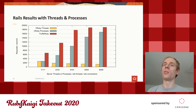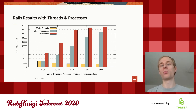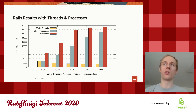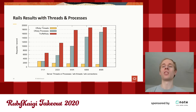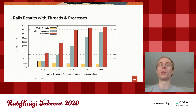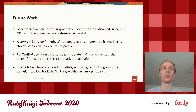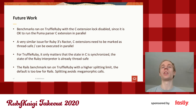Now let's look at Rails. We have CRuby with threads, CRuby with processes, and TruffleRuby. CRuby with threads again becomes slower as threads increase. As the baseline, it reaches almost 3,000 requests per second — this is a plain Rails response, so it's quite fast. TruffleRuby reaches about 6,000 requests per second, which is a 2× speedup on one thread, and as you keep scaling up TruffleRuby stays well ahead, reaching about 18,000 requests per second. The benchmarks ran with the C extension global lock disabled; the only C extension used is the Puma HTTP parser, which is safe to run in parallel.